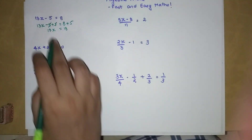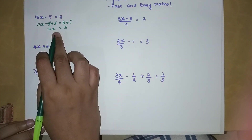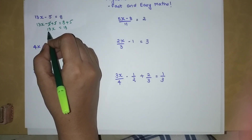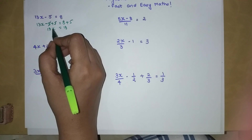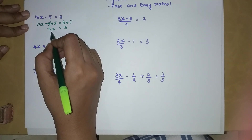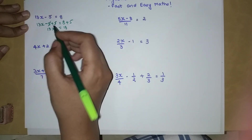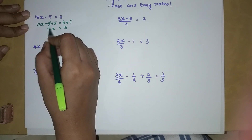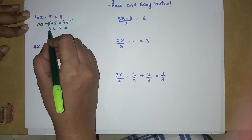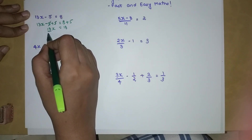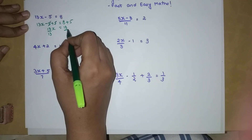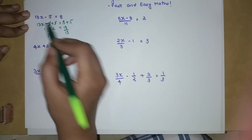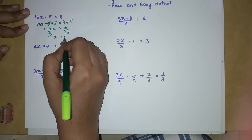When you have 13X, please understand that when there is no sign between the number and the variable, the number is being multiplied with the variable. To find X we need to get rid of 13. Since 13 is being multiplied, if we divide both sides by 13, the 13 here cancels to 1, so X is equal to 1.